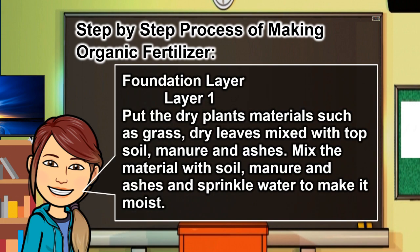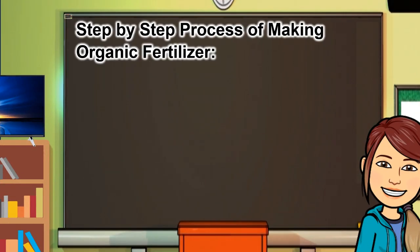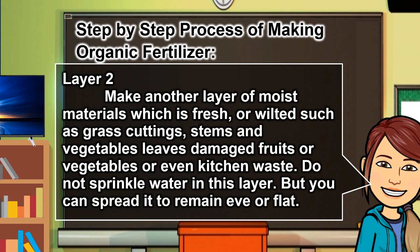Foundation layer — Layer one: put dry plant materials such as grass and dry leaves, mixed with topsoil, manure, and ashes. Sprinkle water to make it moist. Layer two: make another layer of moist materials, which are fresh or wilted, such as grass cuttings, stems, vegetables, leaves, damaged fruits or vegetables, or even kitchen waste. Do not sprinkle water in this layer, but spread it to remain even or flat.